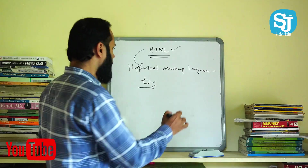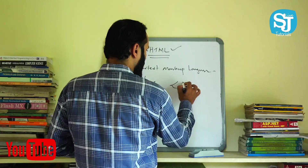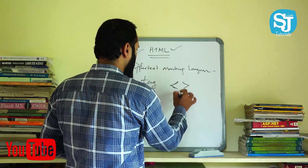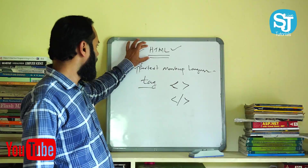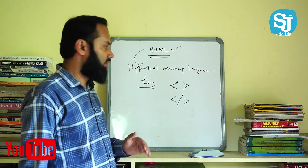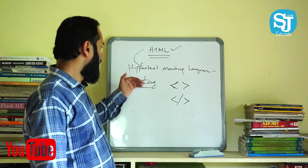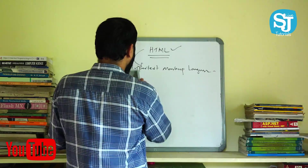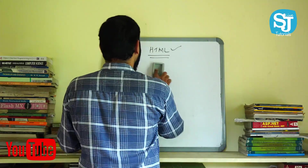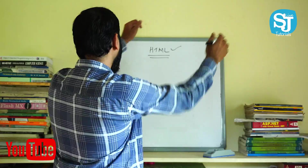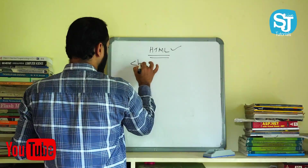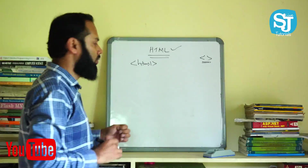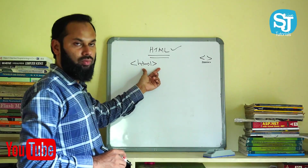What is a tag? Less than, greater than — this angle bracket concept is called a tag. We will start working on this. We will start the code, we will start the HTML tag. I said this is less than or greater than. We will start the HTML program.